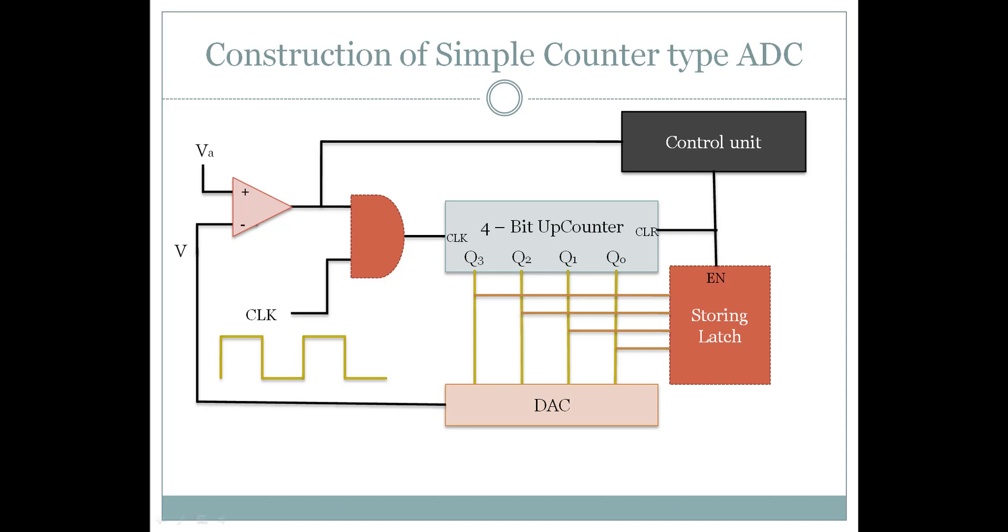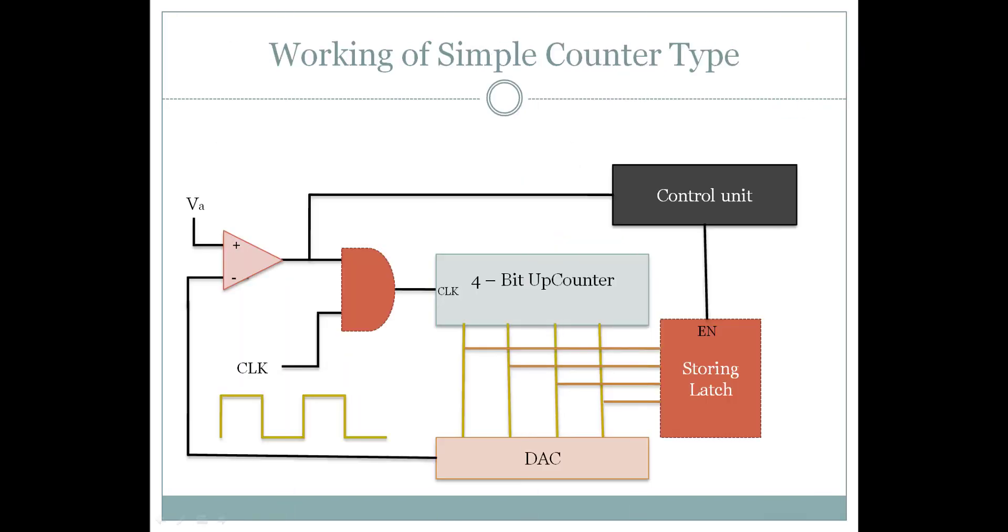Now let's start with the working of this ADC. To understand the basic working of simple counter ADC, let us assume a constant analog voltage, say 5 volts. The initial count in the counter is 0, 0, 0, 0, and hence the reference voltage is 0 volts.